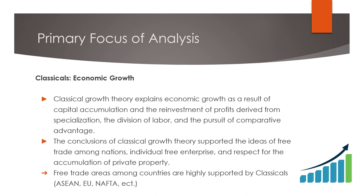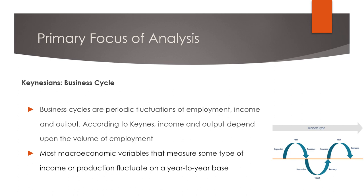While for the Keynesians, the focus is the business cycle. Business cycles are periodic fluctuations of employment, income, and output. According to Keynes, income and output depend upon the volume of employment. Most macroeconomic variables that measure some type of income or production fluctuate on a year-to-year basis.